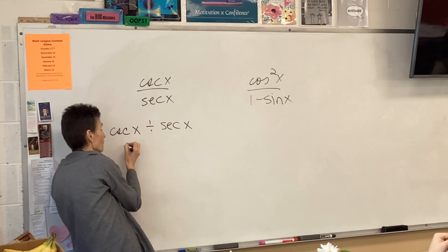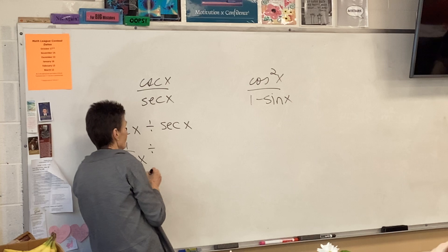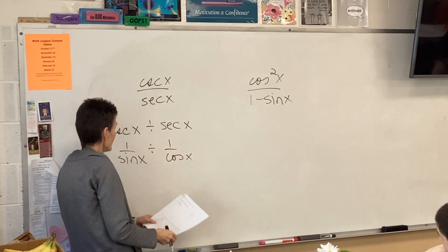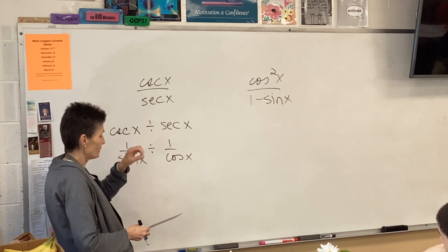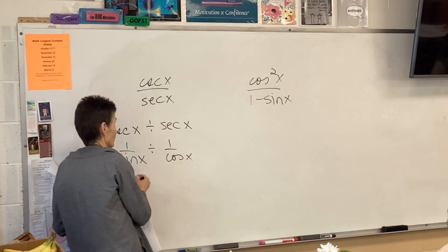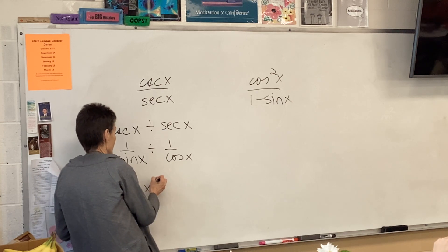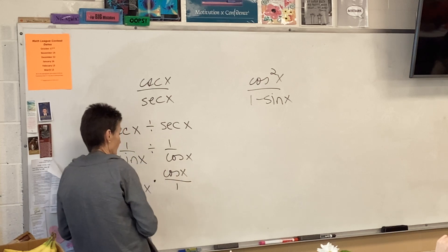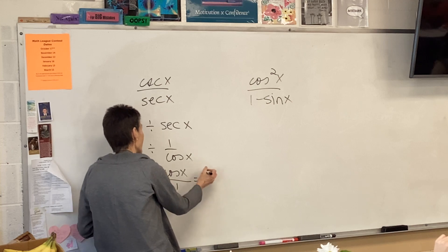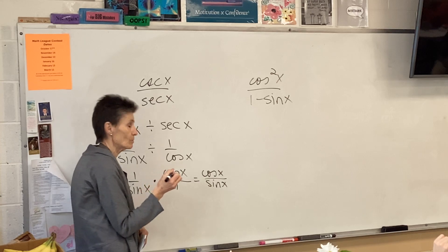What's cosecant? One over the sine, and secant, one over the cosine. And then we have this fraction divided by a fraction, so we will keep, change, flip. Now nothing cancels, but when I multiply them together, I get cosine over sine, which is cotangent.